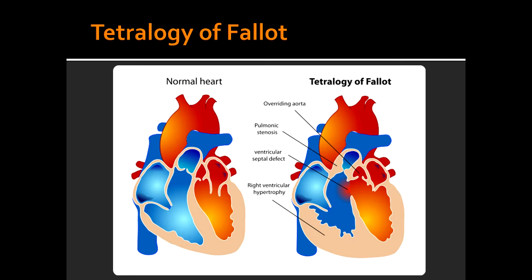Tetralogy of Fallot, as the name suggests, is four different things that are happening in this condition. The first is pulmonary artery stenosis, which is the most important thing in the prognosis of Tetralogy of Fallot.